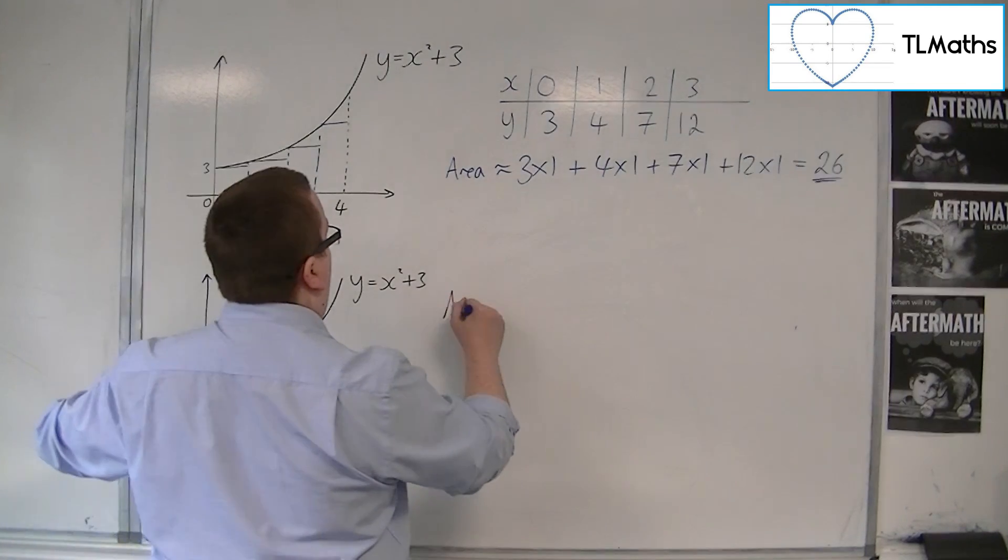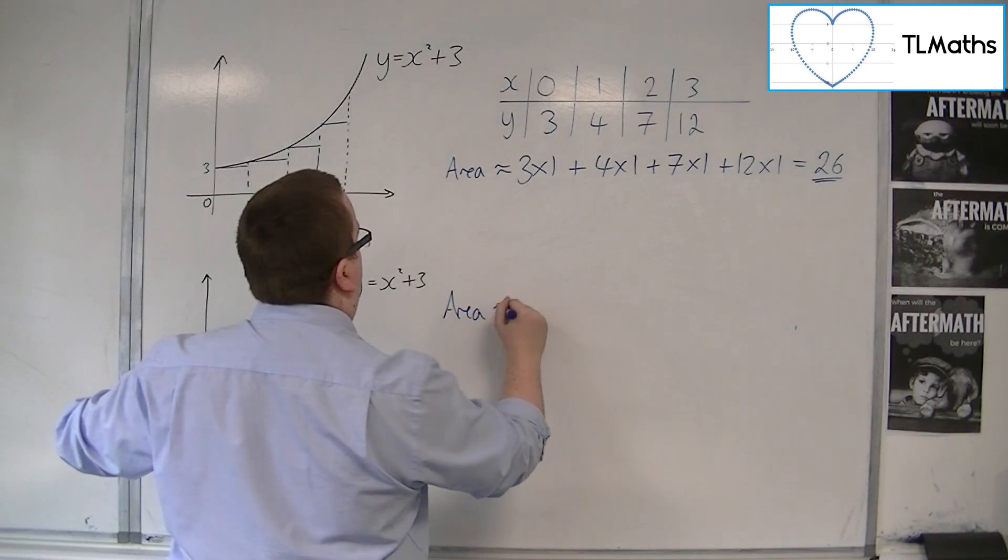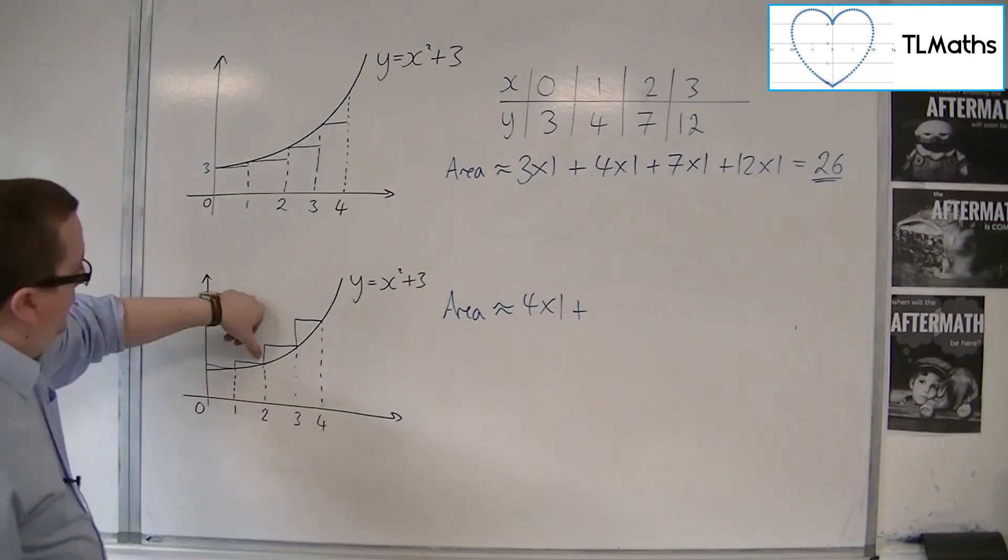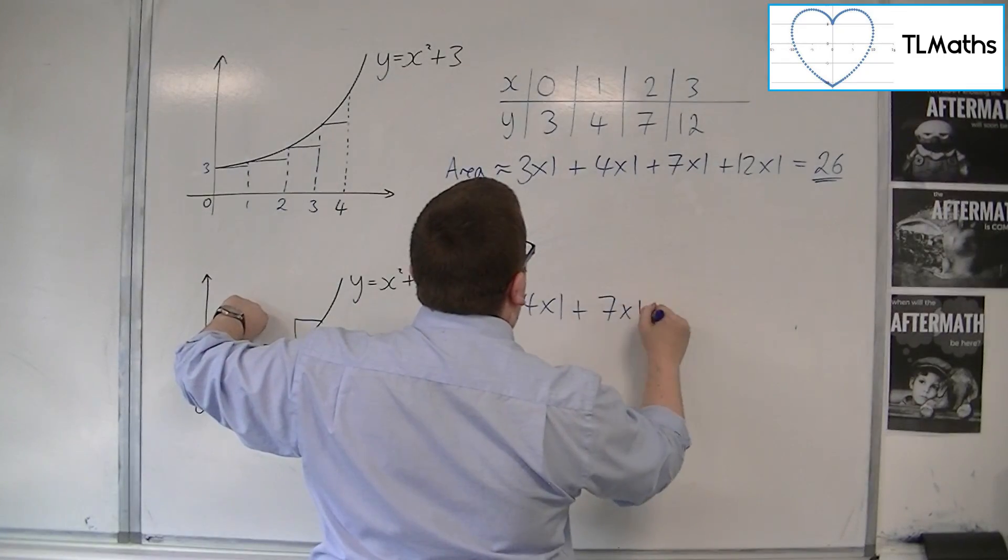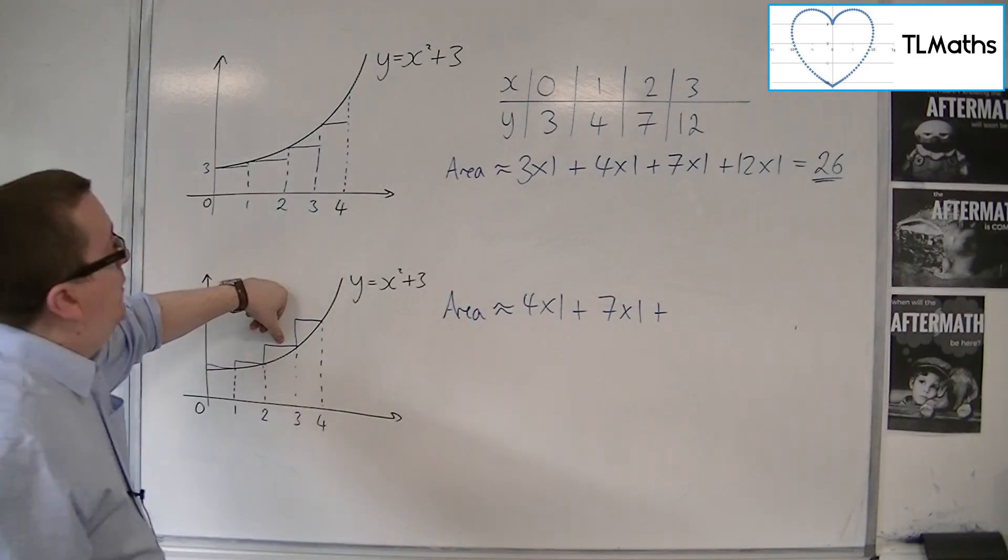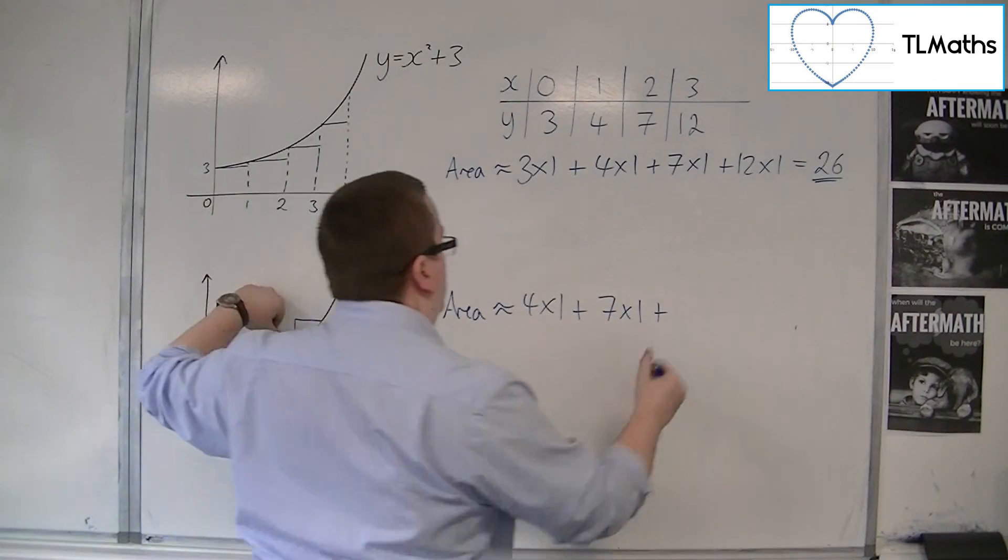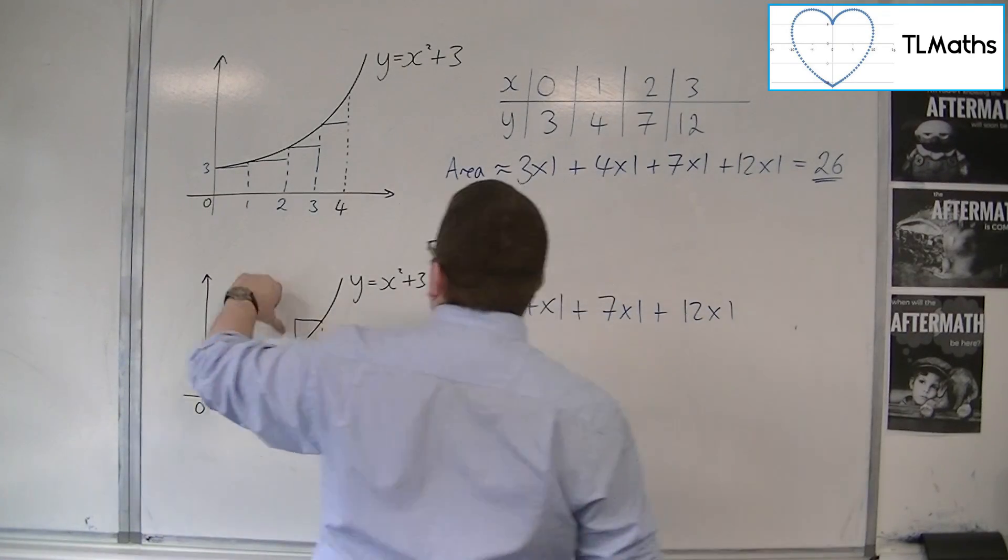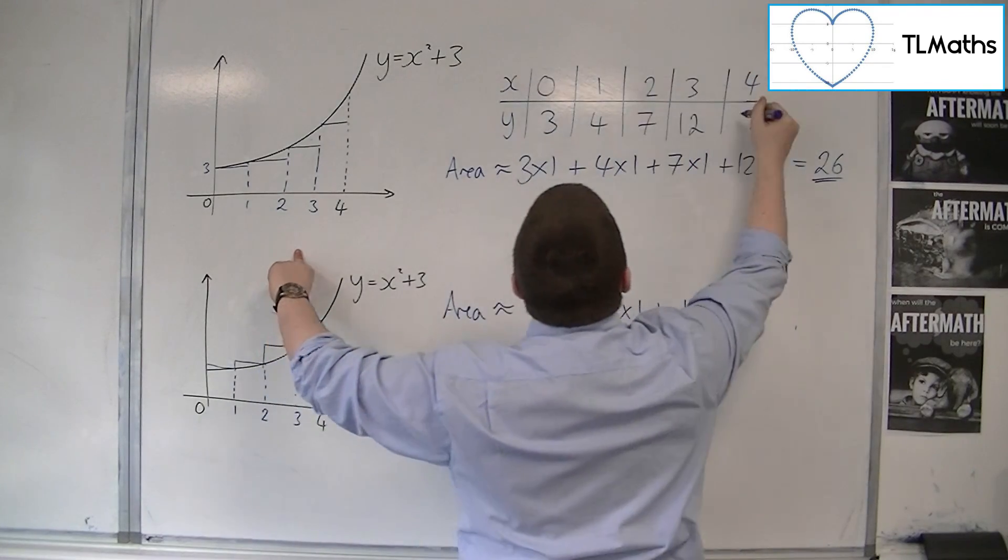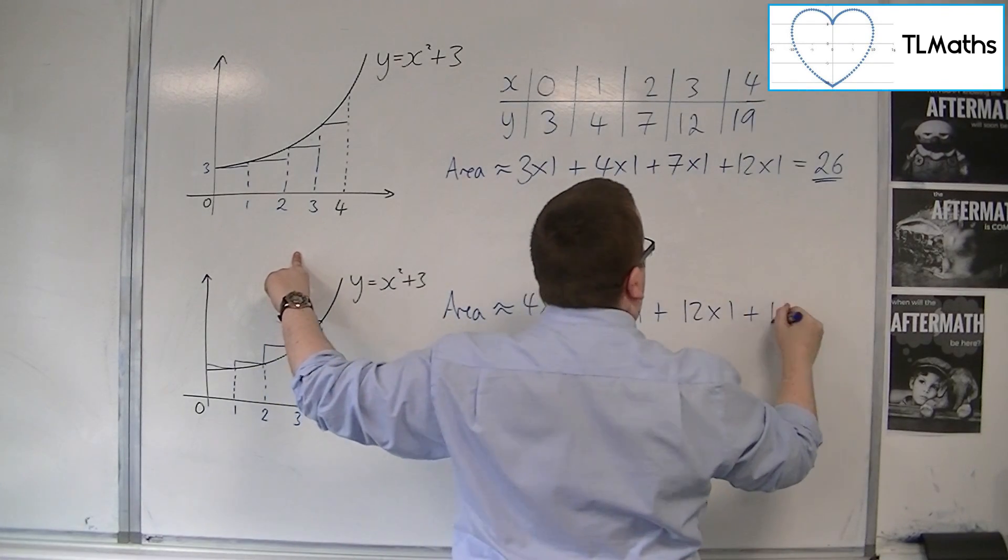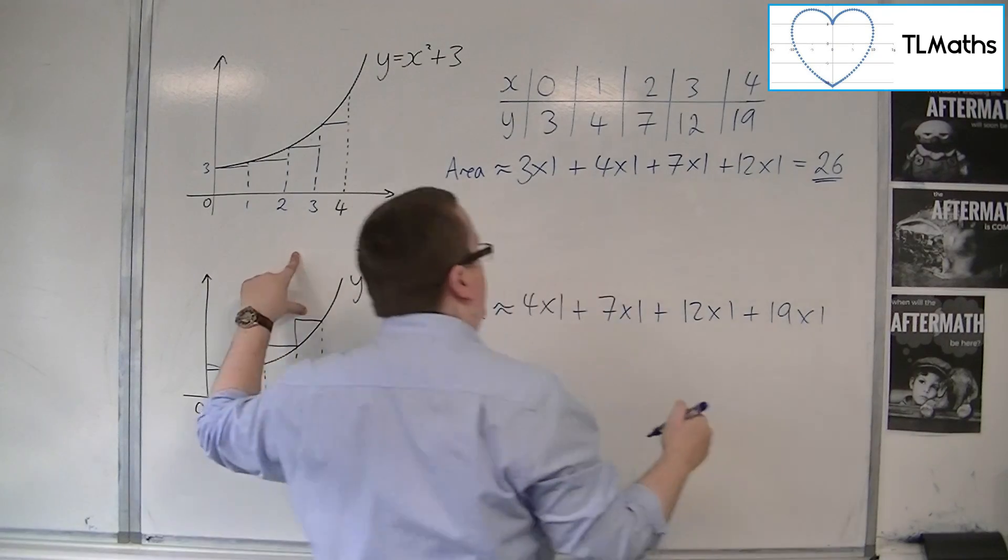So I would have the height of that bar, that's 4, so I'd have this time area is approximately 4 times 1 plus 7 times 1 plus 12 times 1. Now I haven't worked out what happens when x is 4. When x is 4, I'm going to get 19. So the next and last bar is 19 times 1.